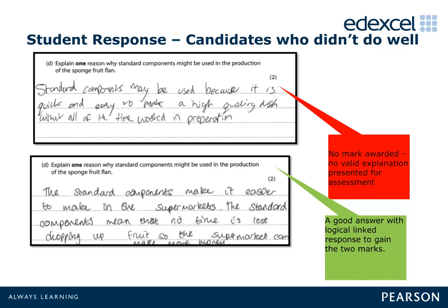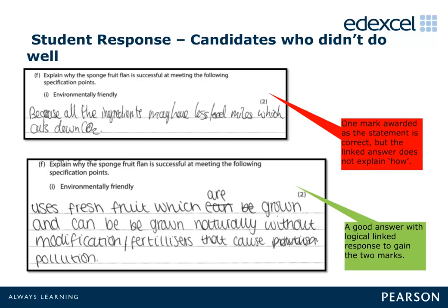Candidates had varying degrees of success depending on their interpretation of the command word 'explain'. Where candidates provided a linked explanation to their initial statement, they were rewarded with the full two marks. The most common answers were to do with reducing waste, consistency and to save time. This question was answered well by most candidates, with many gaining the full two marks.